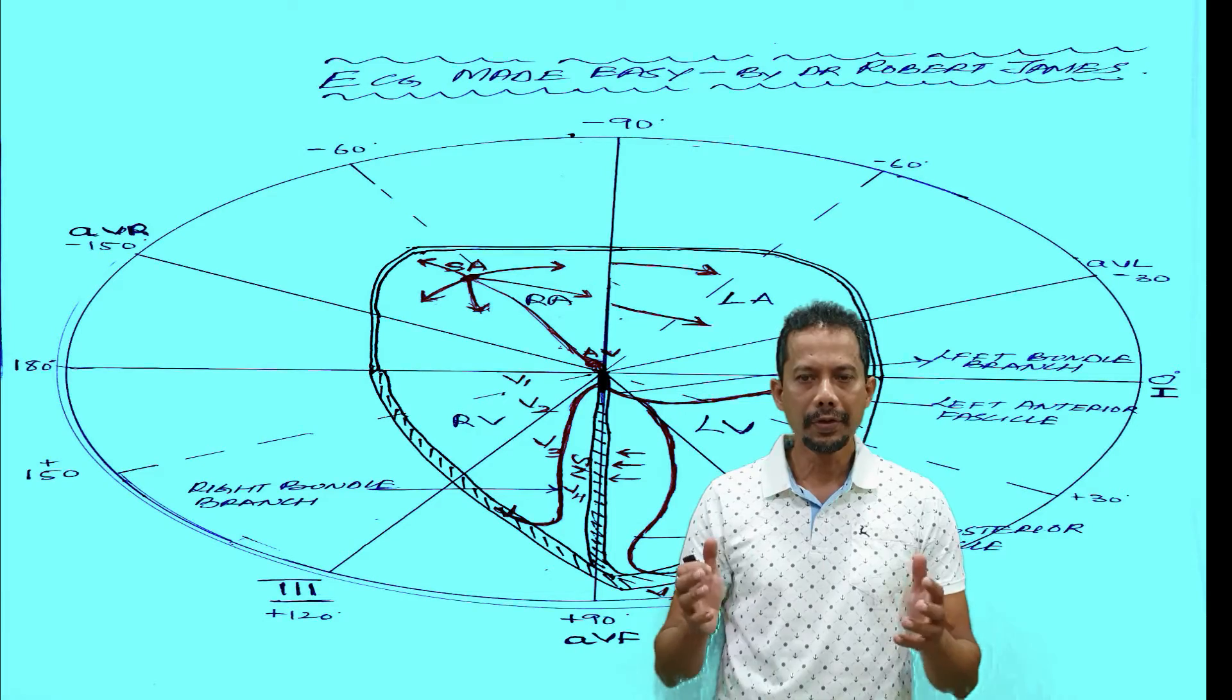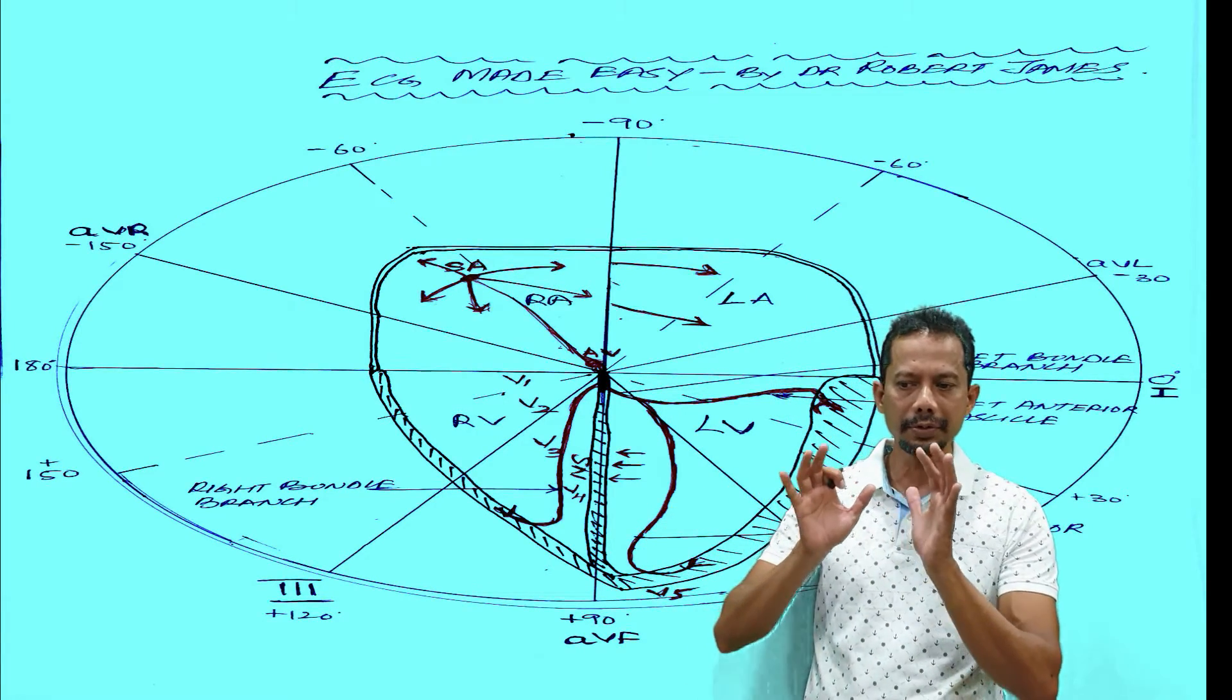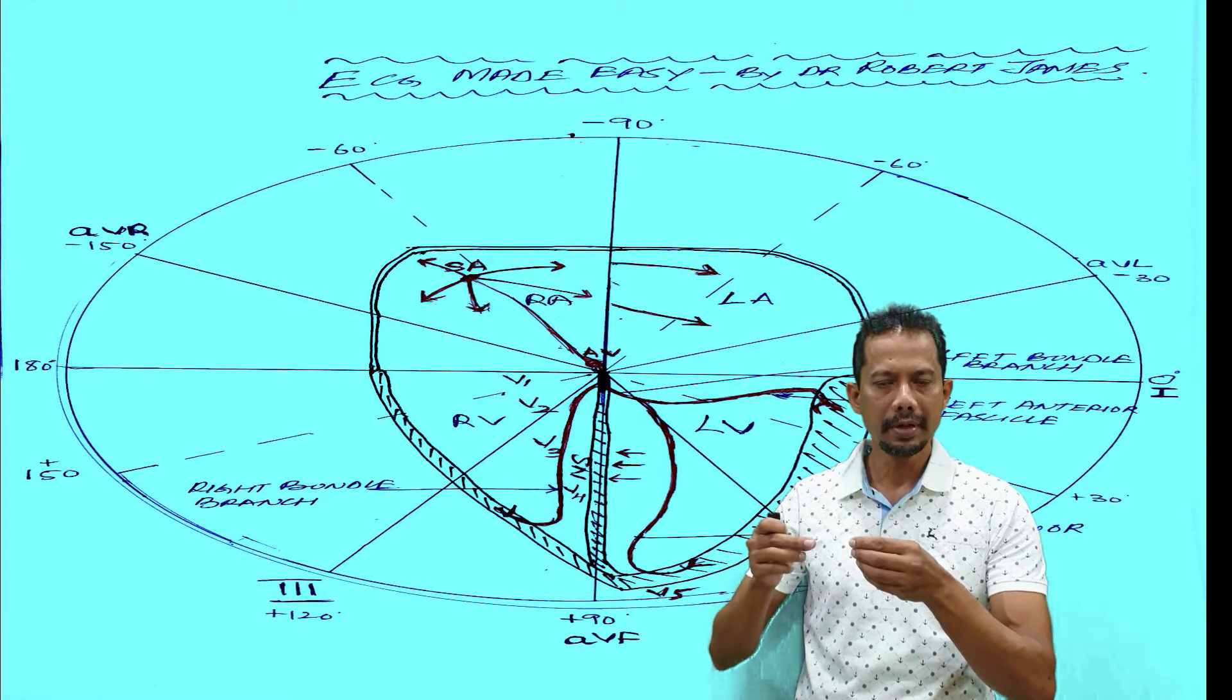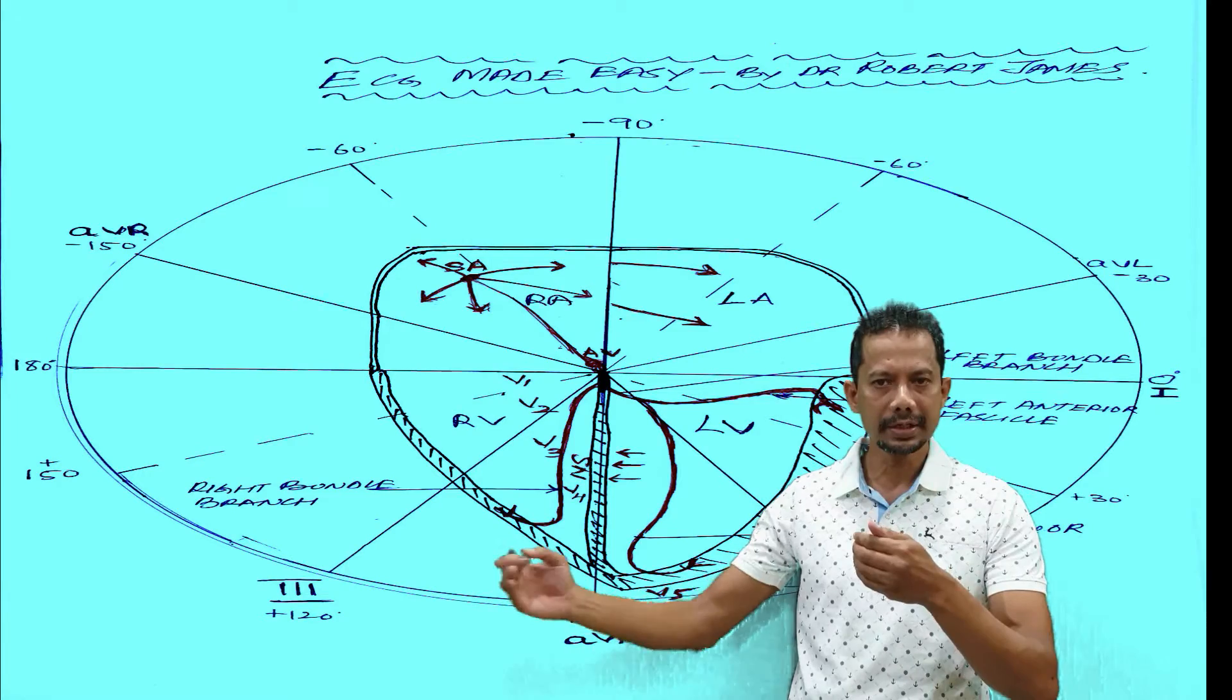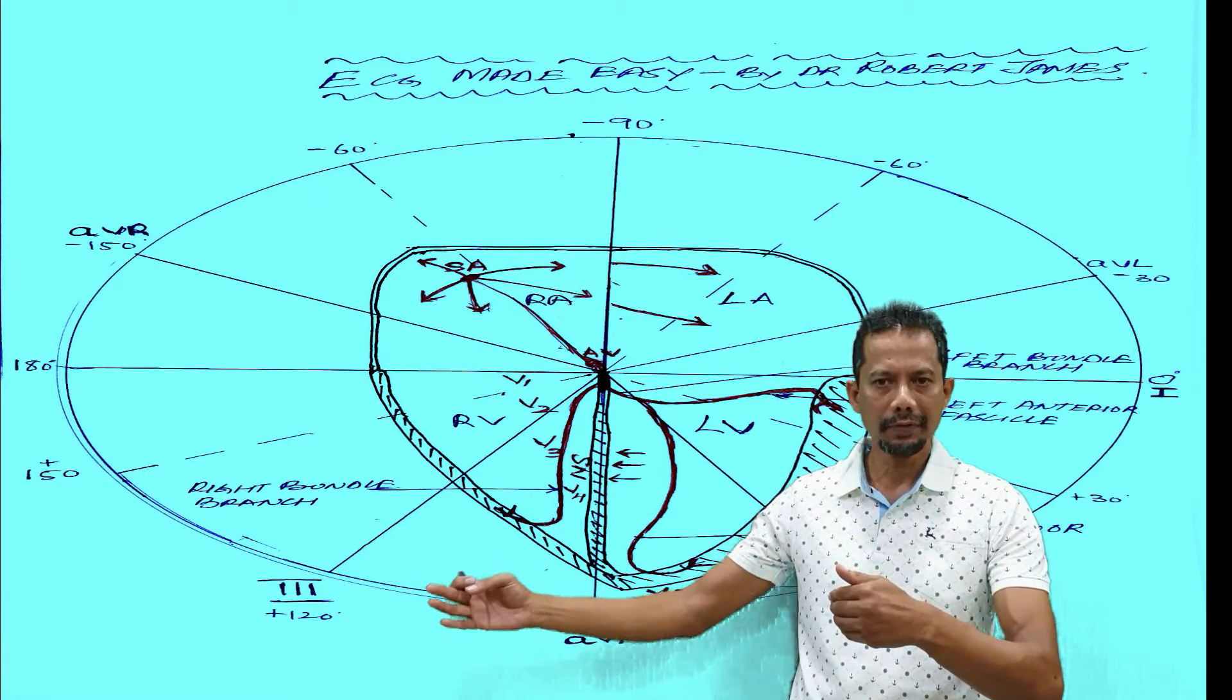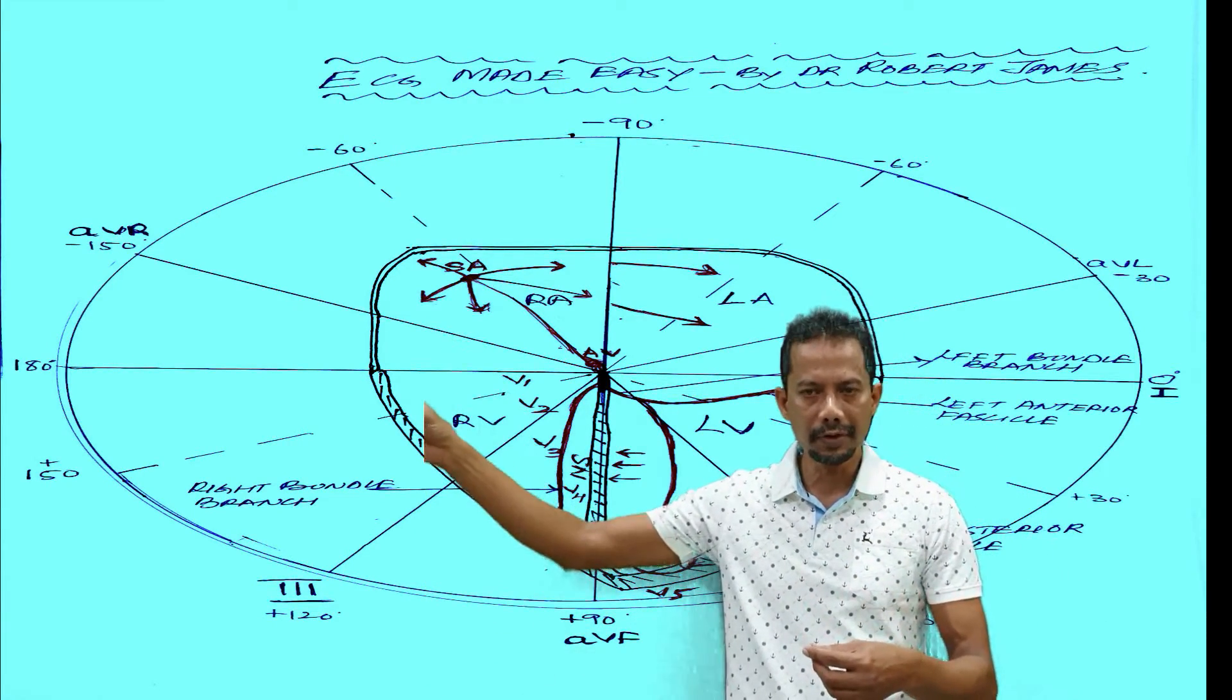V1 and V2 are looking at the interventricular septum, so the impulse is coming towards V1, V2. A small r is forming in V1. At the same time the impulse is going away from V5 and V6. In previous ECG we discussed electrically V1, V2 are inversely proportional to V5, V6. If tall r in V1, V2, deep S in V5, V6. Tall r in V5, V6, deep S in V1, V2.